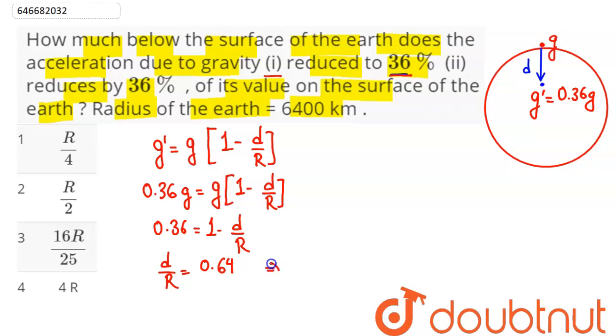So we can say here value of d at 0.64 times the radius of earth. At this depth g value reduces to 36% so we have 64 upon 100 of r. So this here approximately becomes 16r by 25. At this depth it reduces to 36% of the surface.